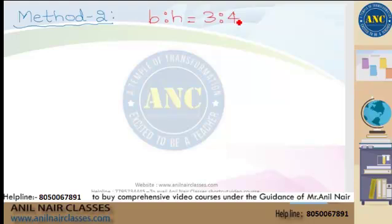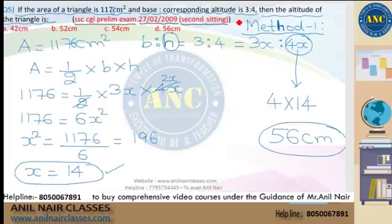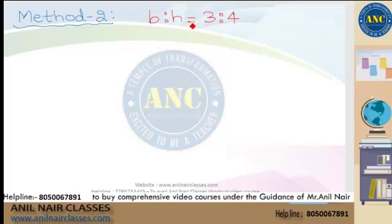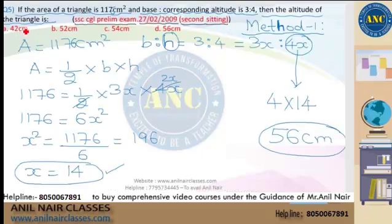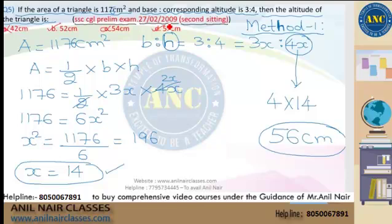In Method 2: base to corresponding height ratio is 3 is to 4, so according to the ratio, base is 3 cm and height is 4 cm. The question asks for the height. According to the ratio, height is 4 cm, so the answer must be a multiple of 4. Option 52 — is it a multiple of 4? Yes. Option 54 — not a multiple of 4, ruled out. Option 56 — also a multiple of 4.